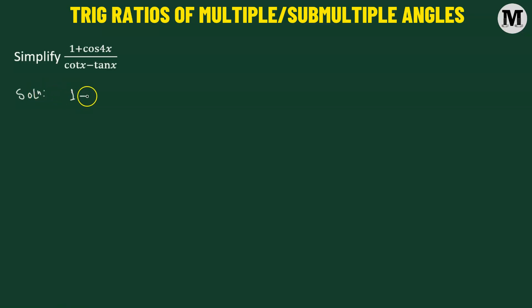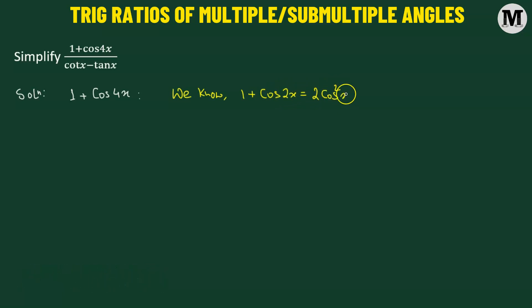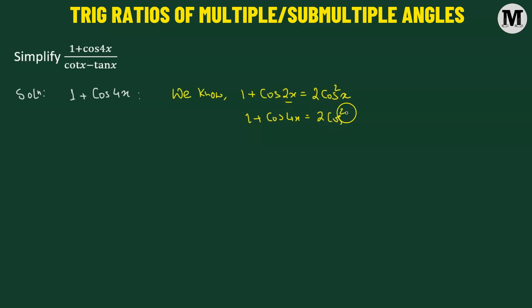First, we'll simplify the numerator. We have 1 plus cosine of 4x. We know there's a standard formula: whenever we have 1 plus cosine of 2x, that is equivalent to 2 times cosine squared x. To make the angle 4x, we multiply the angle 2x by 2, and accordingly replace x with 2x on the right-hand side, giving us 1 plus cosine of 4x equals 2 times cosine squared 2x.